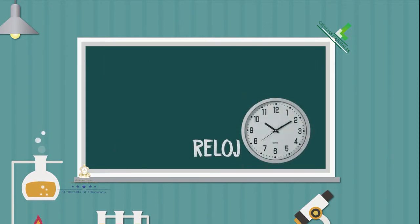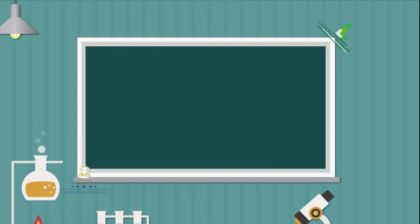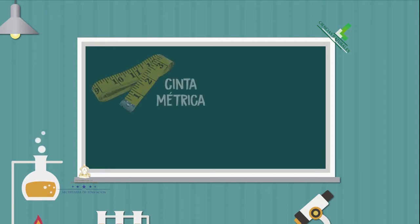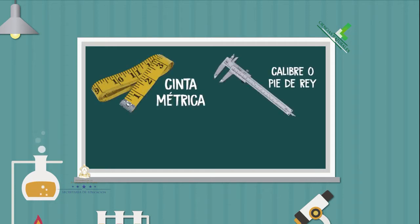¿Han utilizado alguno de estos instrumentos de medición? Estoy segura que sí, ya que son los que más se emplean en la casa. Entre los instrumentos que sirven para medir longitud se encuentran la cinta métrica, el escalímetro o también llamado pie de rey, la regla y otros.